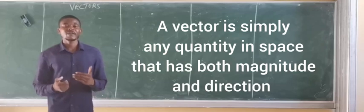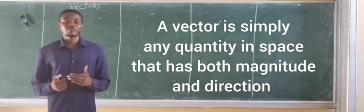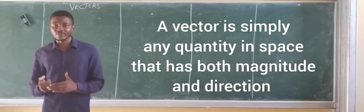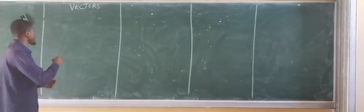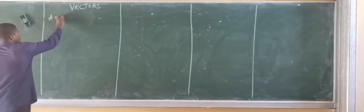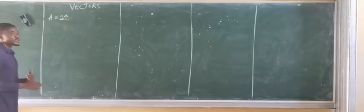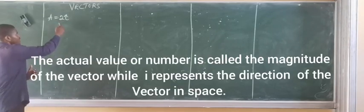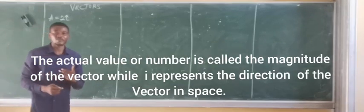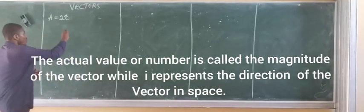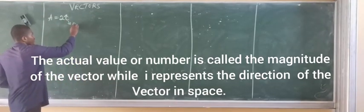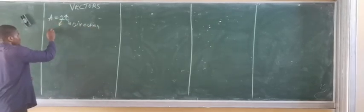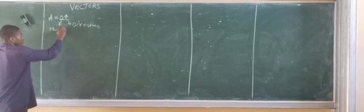What is a vector? A vector is simply any quantity represented in space which has magnitude and direction. For instance, let's say I have vector A and the value is simply 2I. This tells us that vector A has a magnitude of 2, called the magnitude of the vector, while I is called the direction of the vector.